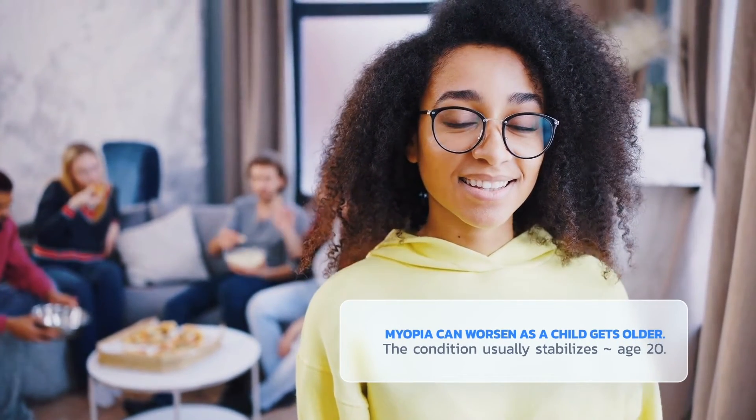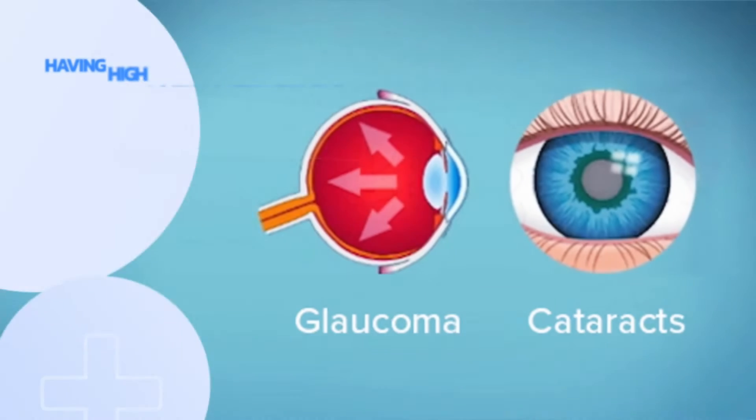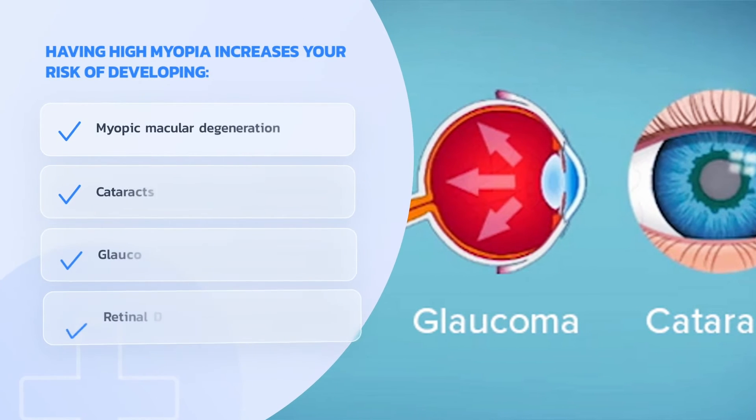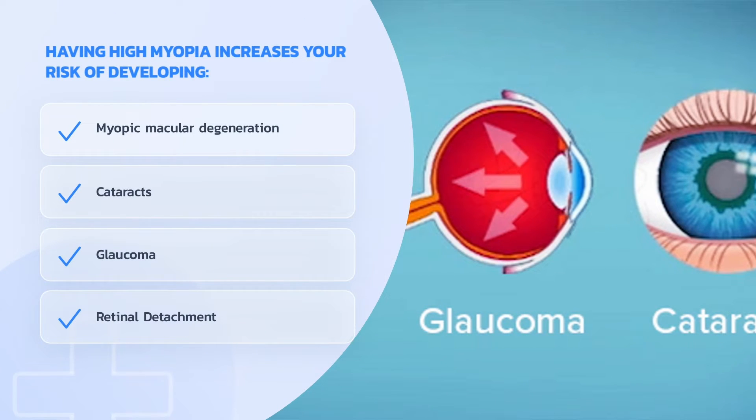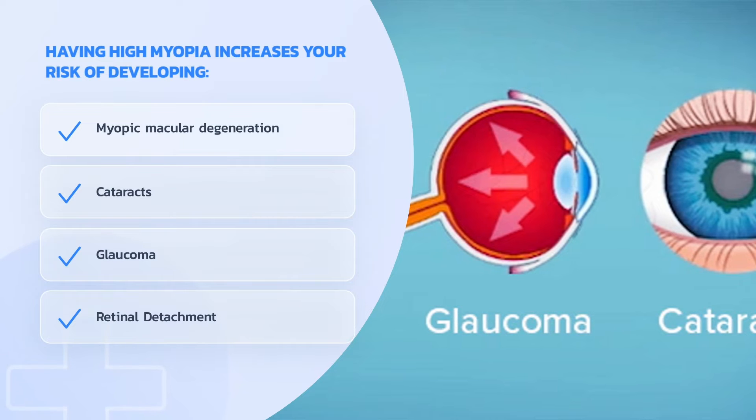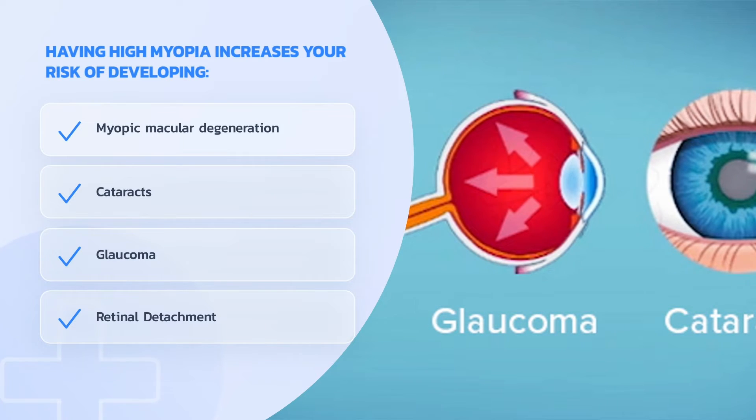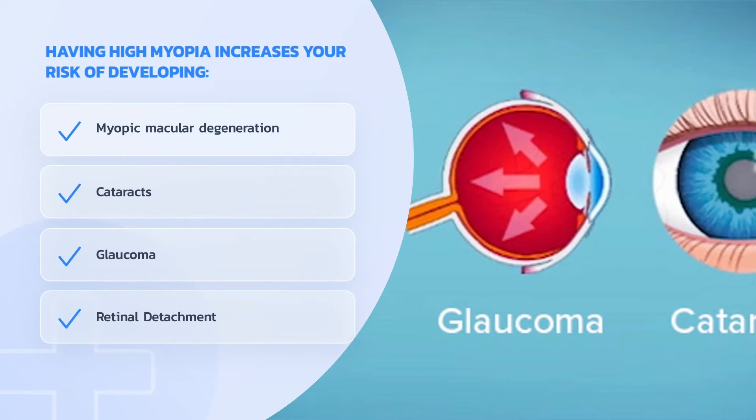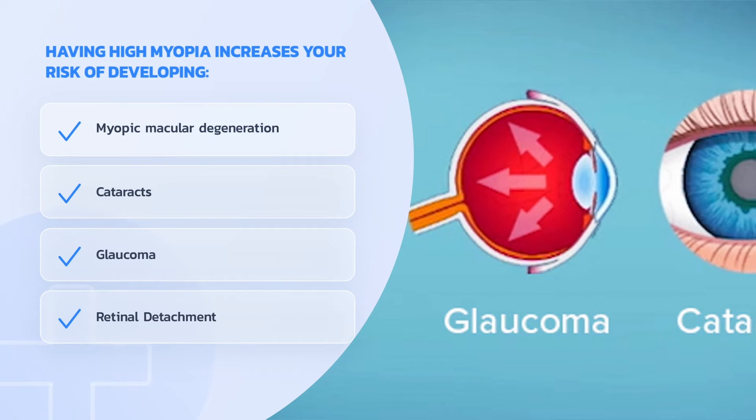While children may start out with a low myopia prescription, the condition can worsen as they get older. Myopia usually starts to stabilize around age 18 to 20, though it's possible for it to progress until later. People with high myopia are at a higher risk of developing sight-threatening conditions later in life. These can include myopic macular degeneration, cataracts, glaucoma, and retinal detachment.